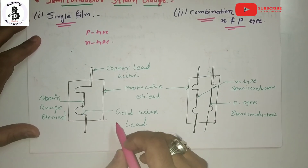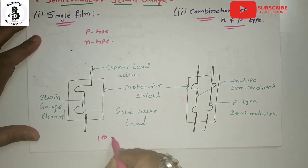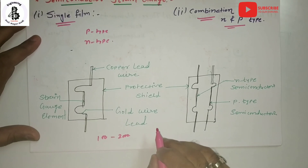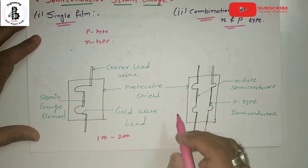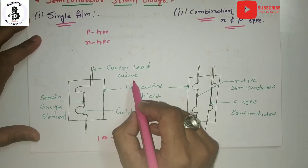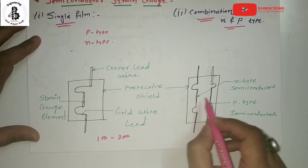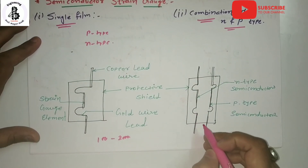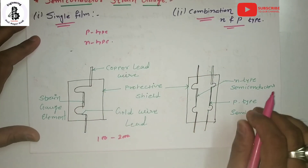The main advantages of semiconductor gauges are a highly high gauge factor, around 100 to 200, and good sensitivity. They can be used for dynamic strain measurement and have low hysteresis. However, they are suitable only for small strain measurement because of their brittle characteristics. In construction, there is the strain gauge element with copper lead wire, which is highly conductive, along with two protective covers. A single frame or a double frame can be used — the single frame uses only N type, while the double frame uses a combination of N type and P type, with gold wire leads.